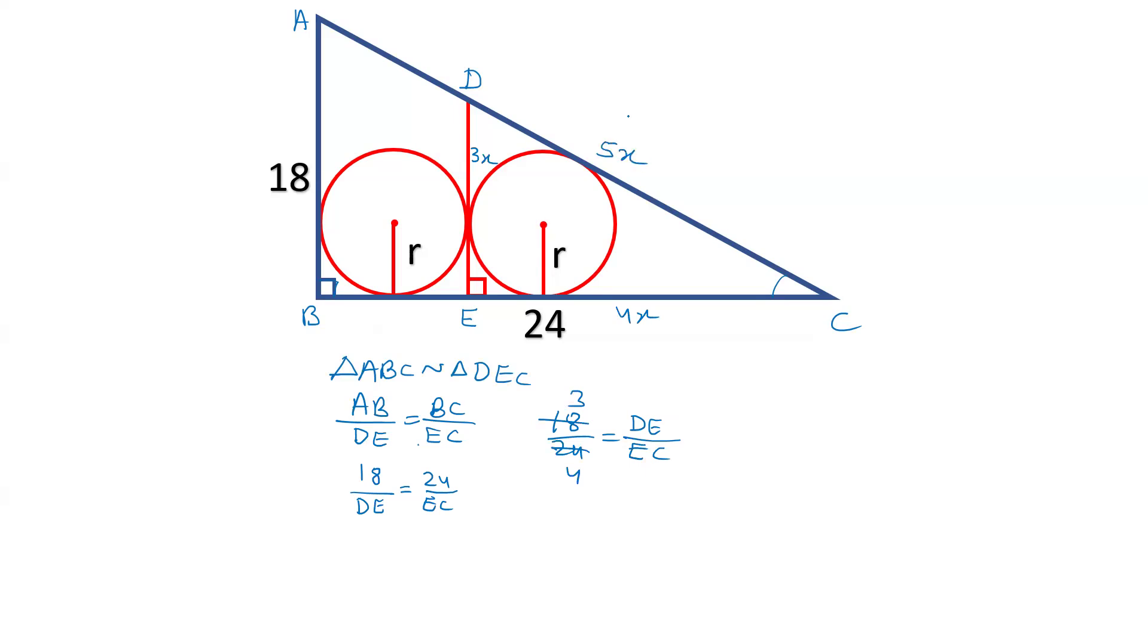Now, in one of my earlier videos, I have explained that for any incircle which is in a right angle triangle, the radius will always be equal to A plus B minus C by 2. There is a shortcut to find the inradius. So we have three sides A, B, and C. A and B are 3x and 4x, and C is 5x divided by 2.